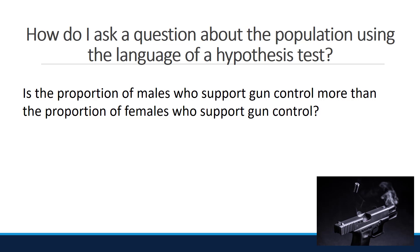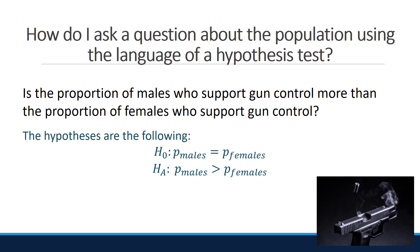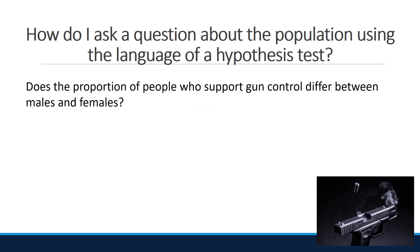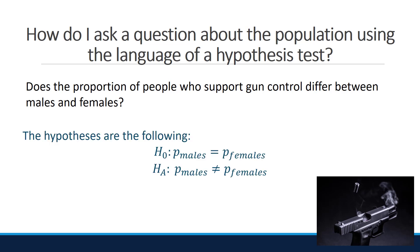Your turn. Take a moment, pause the video, and see if you can find the notation for: is the proportion of males who support gun control more than the proportion of females who support gun control? Use the notation to set up the null and alternative hypothesis. Then pause the video and see if you can set up the hypothesis for: does the proportion of people who support gun control differ between males and females? You should have found the following hypotheses.